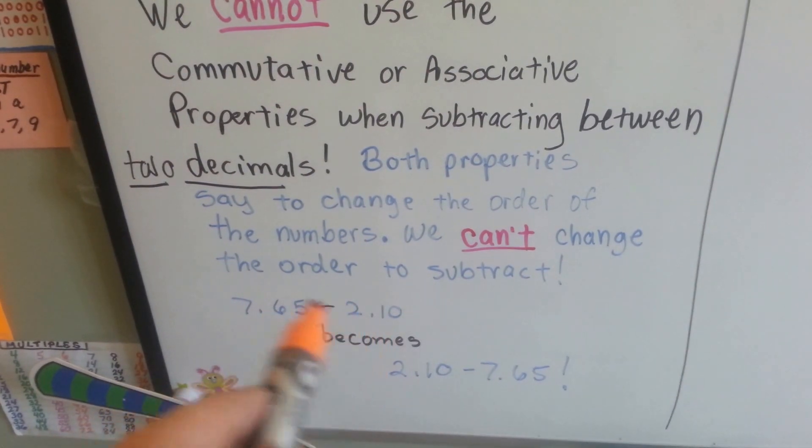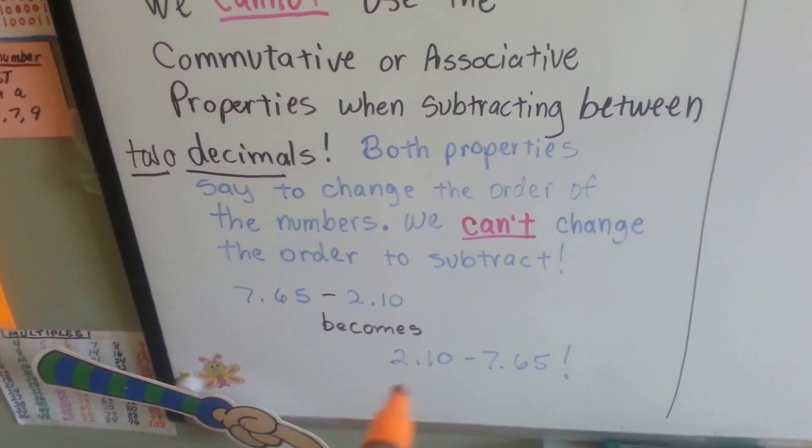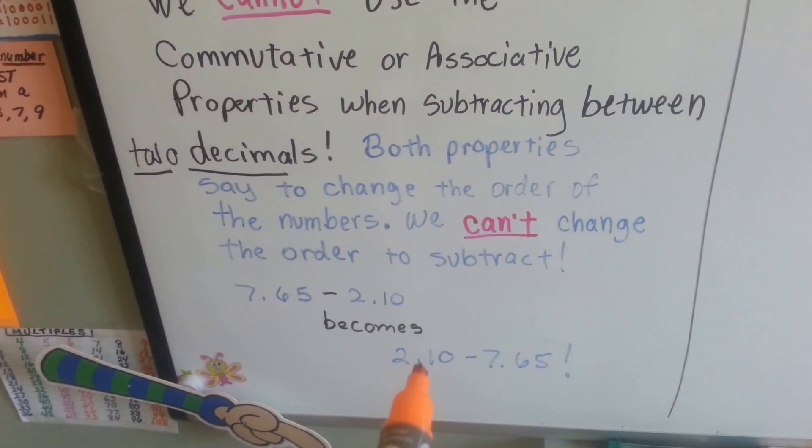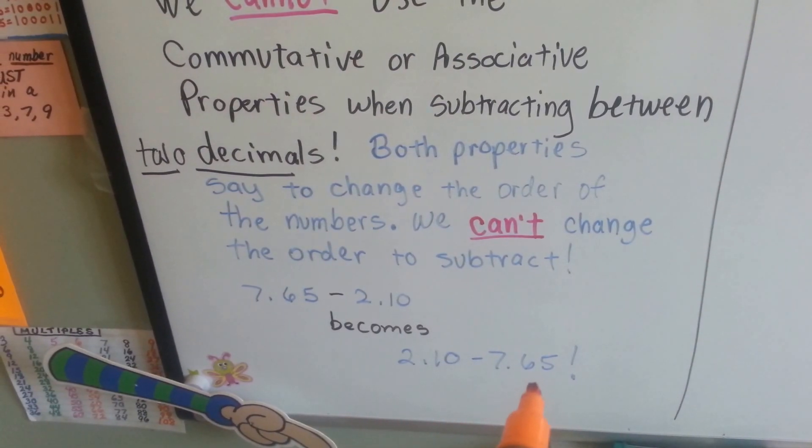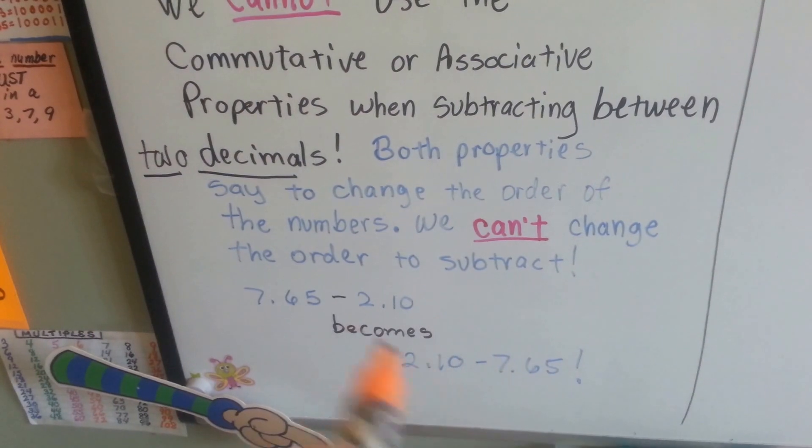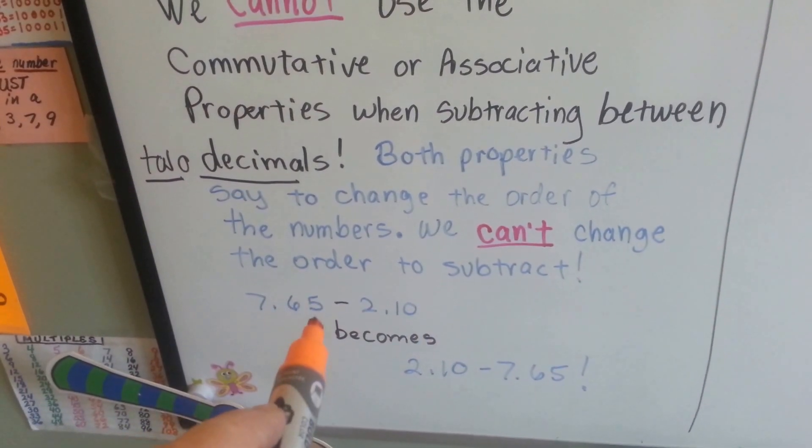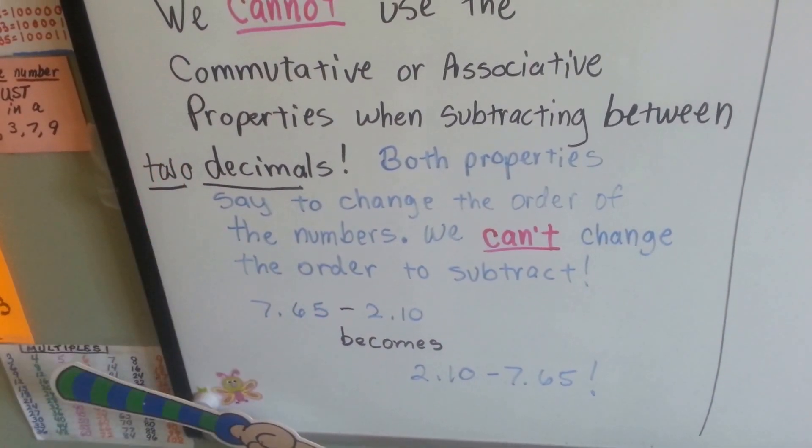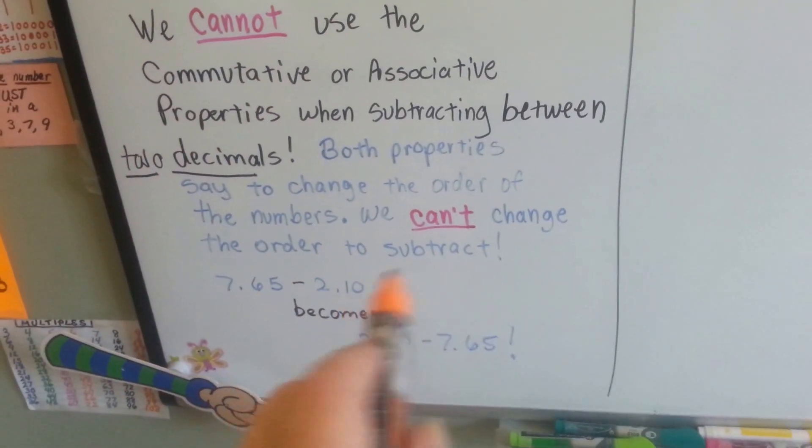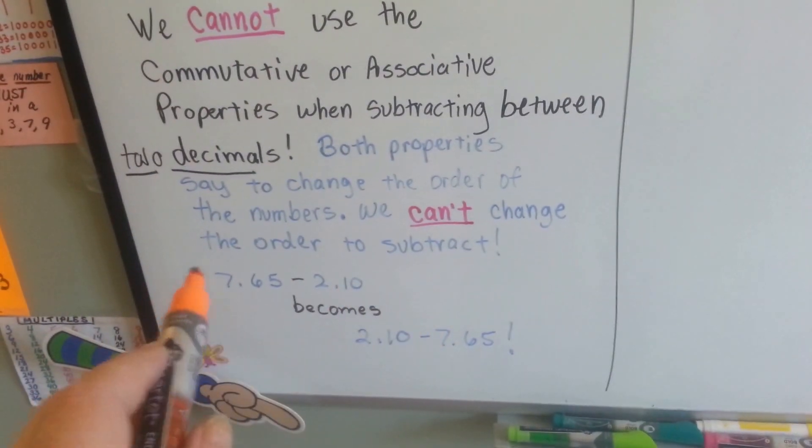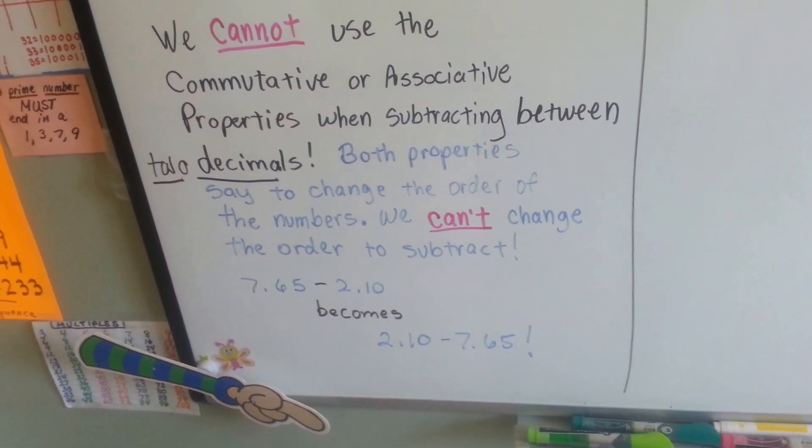If you had two numbers and you changed their order, then that means you have $2.10 minus $7.65. You can't take that money away, can you? So you can't do it with two decimals. You can do it with three, because you could change the order of the last two, but you'd never be able to change the order of the first one.